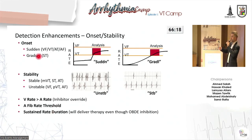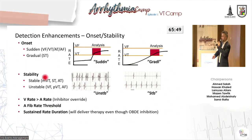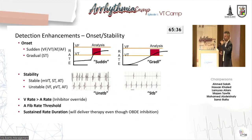Regarding onset and stability: if onset is sudden, the device interprets it as VF, VT, AT, or AF due to the sudden increase in heart rate. If gradual, the device interprets it as sinus tachycardia. For stability: if the rhythm is stable, it means monomorphic VT, sinus tachycardia, or atrial tachycardia. If unstable, it means VF, polymorphic VT, or AF.